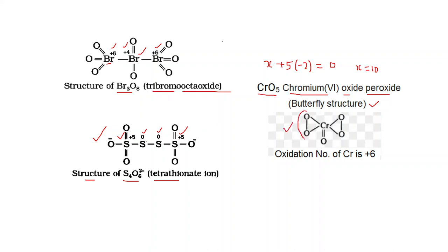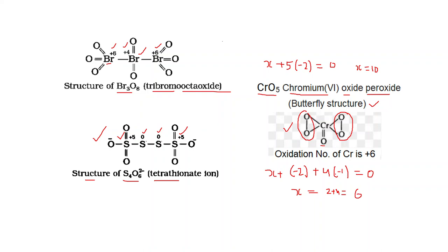Looking at the actual structure of CrO₅: two pairs of oxygen atoms are attached in peroxide form (each oxygen at −1), and one oxygen is in normal form (−2). So the equation becomes: x + (1 × −2) + (4 × −1) = 0, which gives x = 2 + 4 = +6. The actual oxidation number of chromium in CrO₅ is +6.